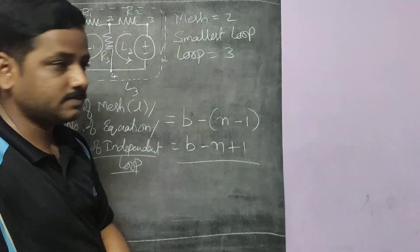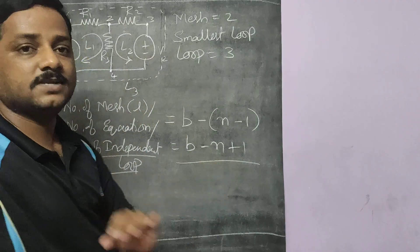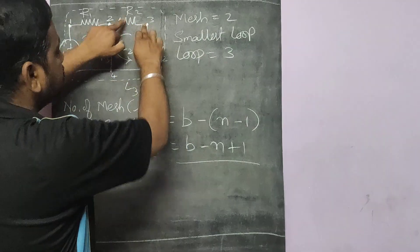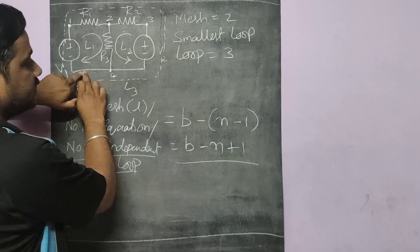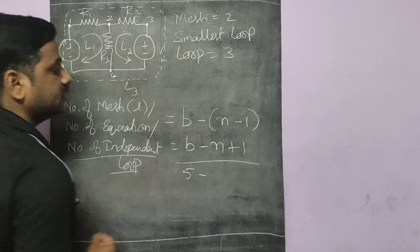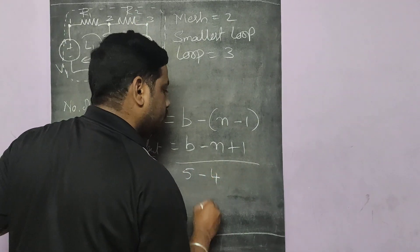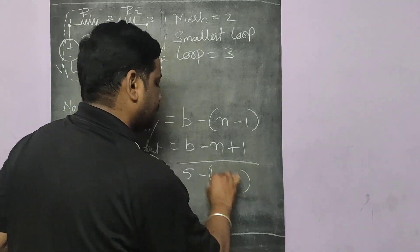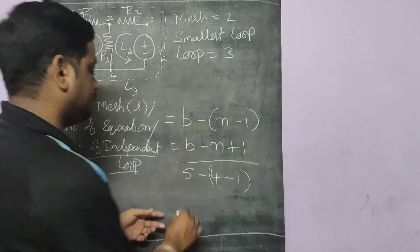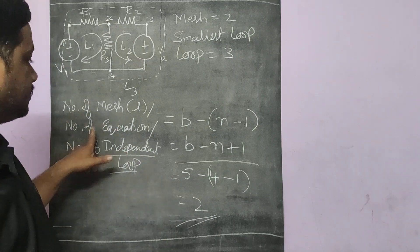Taking the same example: B stands for branches — we have 1, 2, 3, 4, 5 branches. N stands for nodes — we have 4 nodes. So: 5 minus (4 minus 1) = 5 minus 3 = 2. We get 2 independent loops, or 2 meshes, or 2 equations.